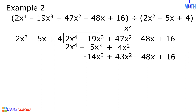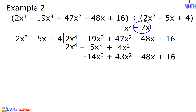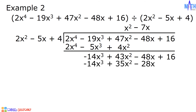Let us repeat the process. Negative 14x cubed divided by 2x squared equals negative 7x. Let us multiply negative 7x by 2x squared minus 5x plus 4. Negative 7x times 2x squared equals negative 14x cubed. Negative 7x times negative 5x equals positive 35x squared. Negative 7x times 4 equals negative 28x.